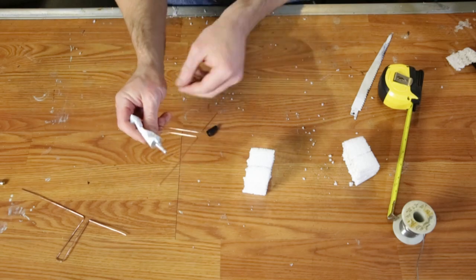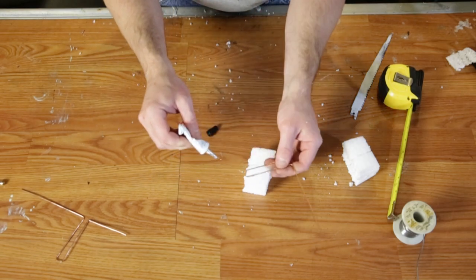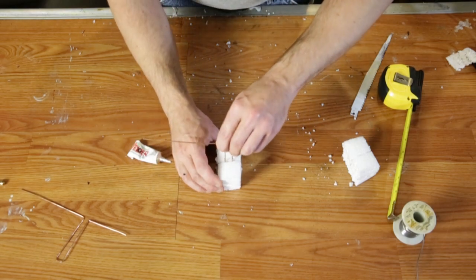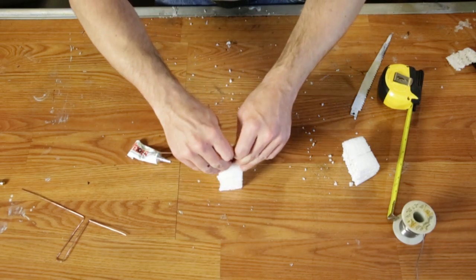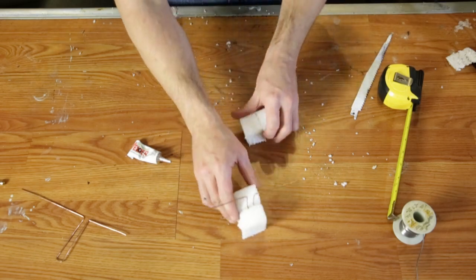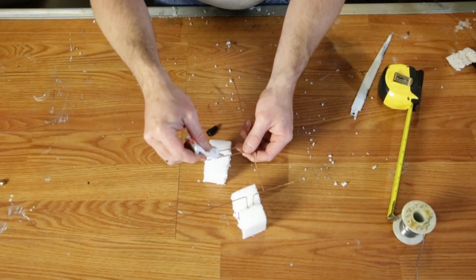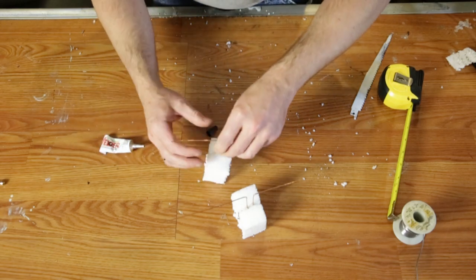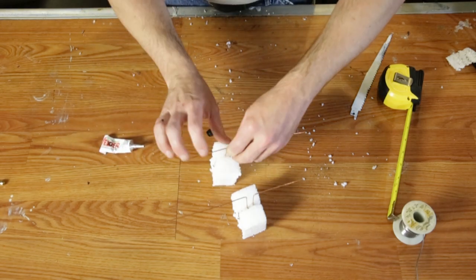Now I'll mount the elements to each block. I'm adding a little bit of glue around the U shape of each element, then jamming it down in the foam block till it stops. It won't go through because there's half an inch of foam keeping it from doing so. I'll do this to both of them.